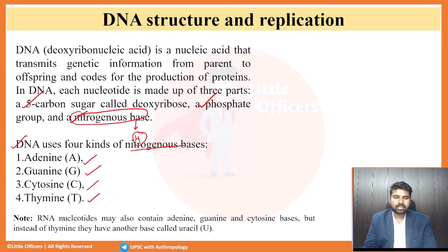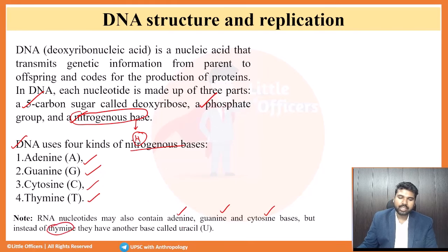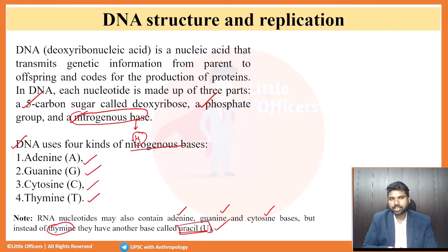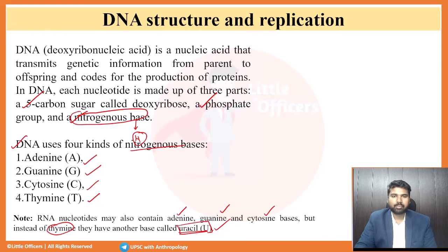Apart from DNA, there are other nucleic acids such as RNA. In RNA, it may also contain adenine, guanine, and cytosine - but in place of thymine, there will be another base called uracil. This is the one which differentiates DNA and RNA.